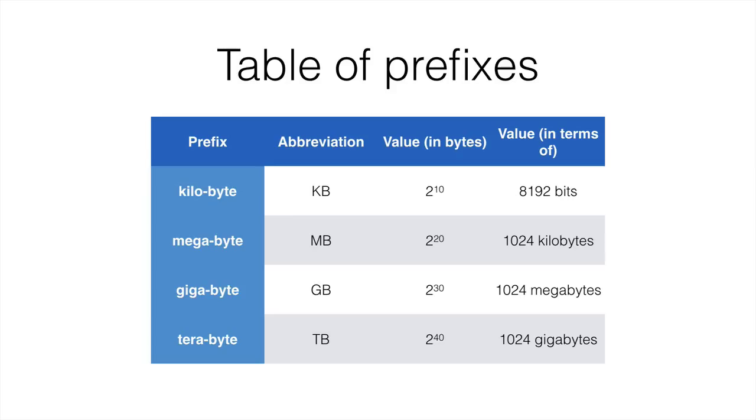Going into the next row, megabyte is 2 to the power of 20 bytes. Gigabyte is 2 to the power of 30 bytes. And terabyte is 2 to the power of 40 bytes.